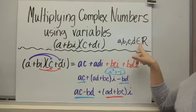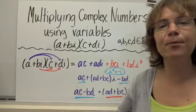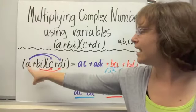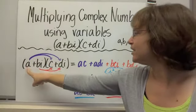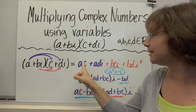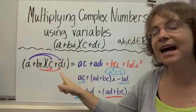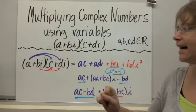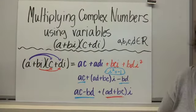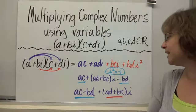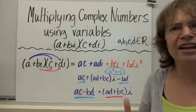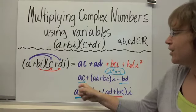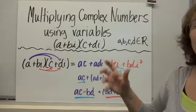So multiplying complex numbers using variables: we have (a plus bi) times (c plus di), where a, b, c, and d are all real numbers. If we can show it works for any real number, we can use that formula to solve any multiplication problem. Distributing a to both c and di gives us ac plus adi. Then distributing bi: bi times c gives bci, and bi times di gives bdi squared. Again, i squared equals negative 1.